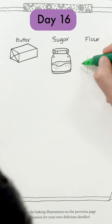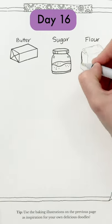And flour is also like a 3D rectangle but with a swirl at the top and some wonky lines.